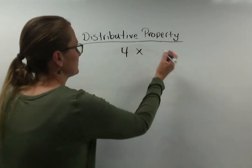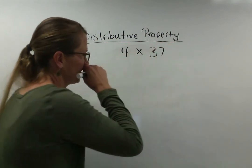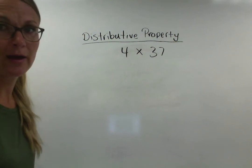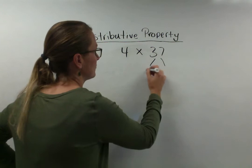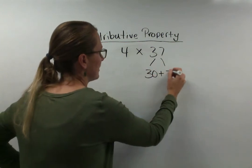So let's say we come across 4 times 37. Oh goodness gracious. Okay well I don't know my 37 times tables. But I can break 37 apart into 30 and 7.